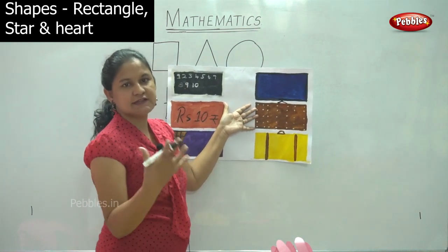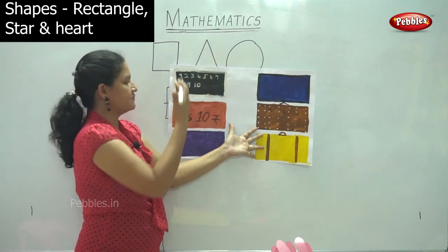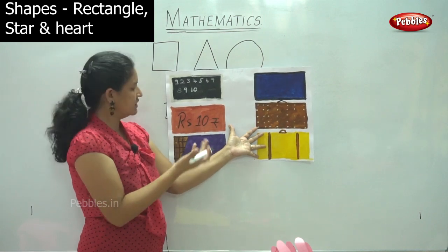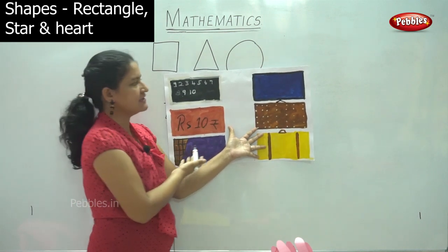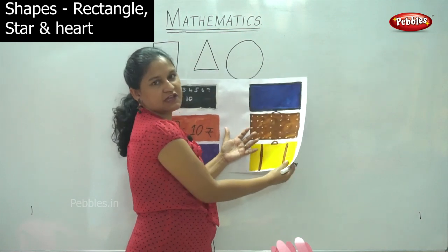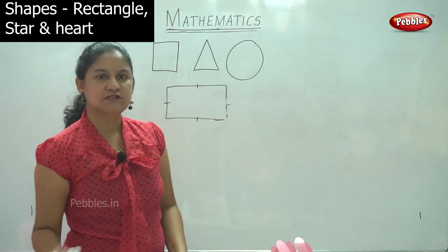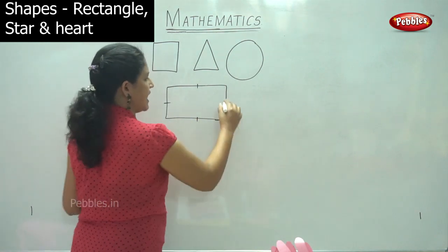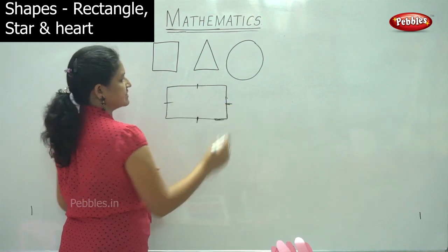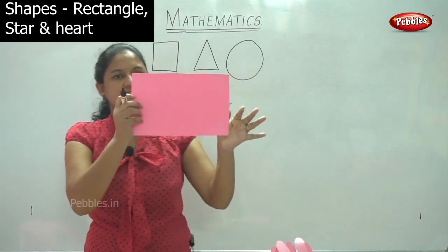So these are all examples of a rectangle: the blackboard or whiteboard, your note, the chocolate, the television, the biscuit, and the suitcase or briefcase that daddy takes to work. A rectangle has opposite sides equal. This is your rectangle.